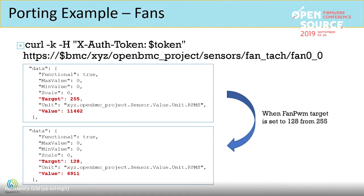When all the fan YAML configs are done, fans will have a value property for fan speed and a target property for fan PWM target. Manually changing the fan PWM target from 255 to 128 decreases the fan speed by about half — but in reality, this target is set based on the YAML we defined previously.